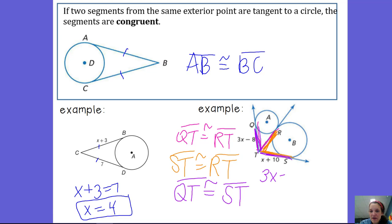So, we can set 3X minus 8 equal to X plus 10, subtract the X, you get 2X minus 8, add the 8, you get 18, divide by 2, X is 9.